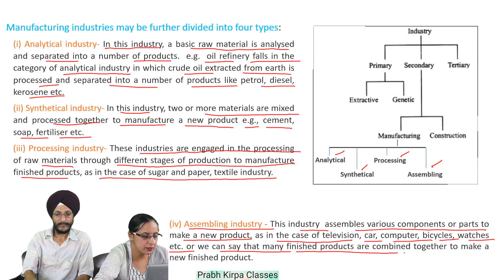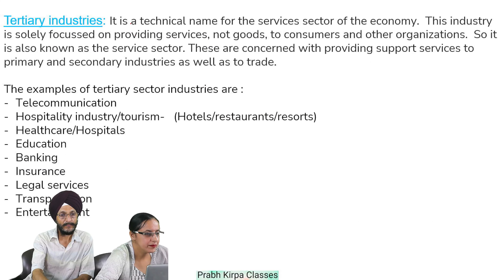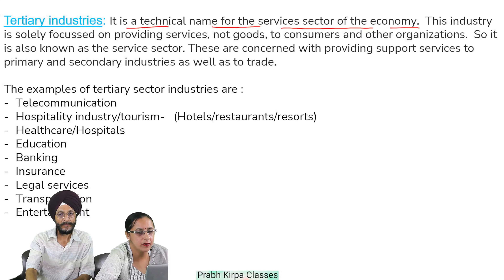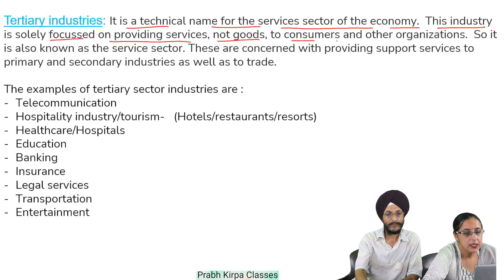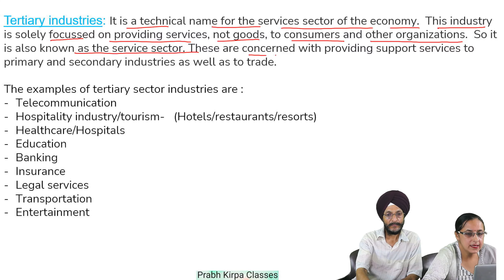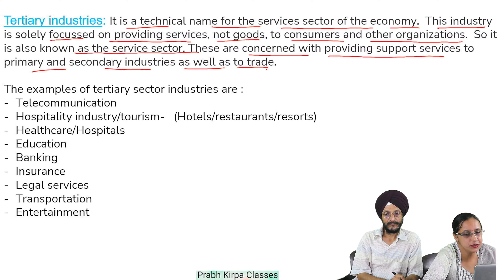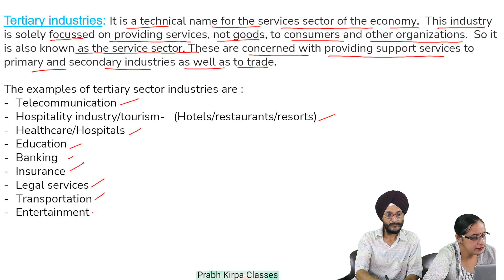We can say that many finished products are combined together to make a new finished product. Tertiary industries: this is a technical name for the services sector of the economy. This industry is solely focused on providing services, not goods, to consumers and other organizations — it is also known as the service sector. These industries are concerned with providing support services to primary and secondary industries as well as to trade. Examples include telecommunication, hospitality or tourism, healthcare or hospitals, education, banking, insurance, legal services, transportation, and entertainment.